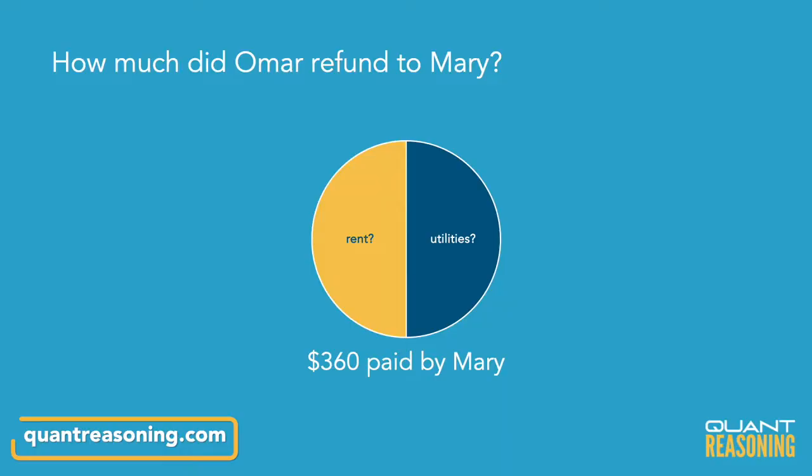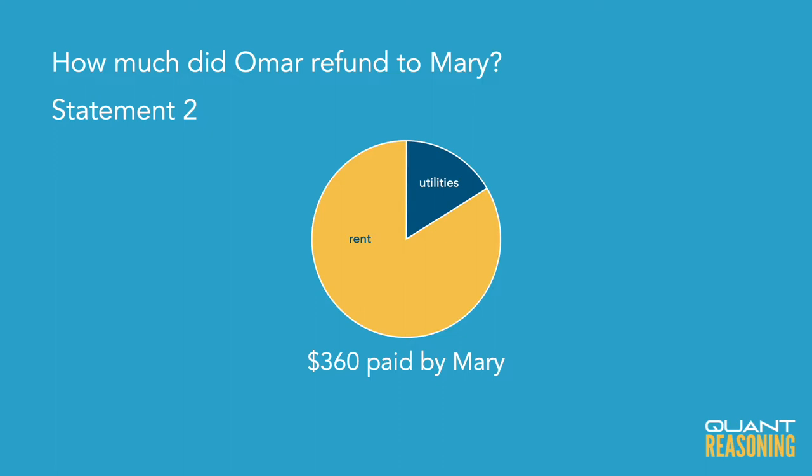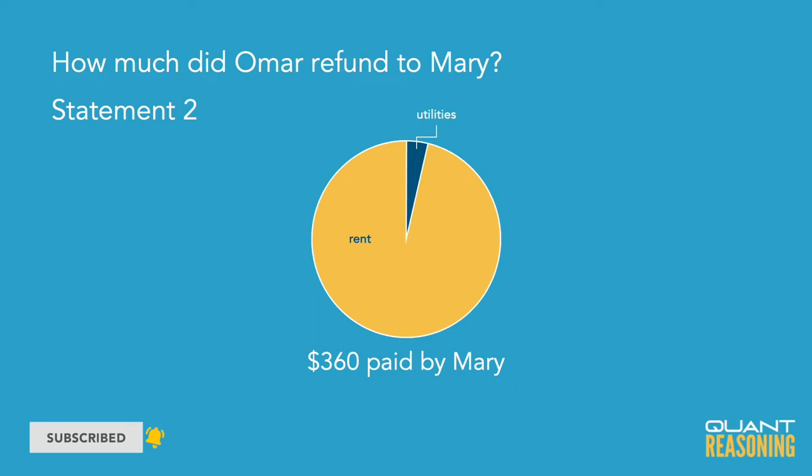Statement two looks promising because it does kind of mention some kind of fraction or ratio of the amount of money spent on rent versus utilities. The only problem though is the words 'less than' — it's less than one-fifth — so we are not actually told the proportions of rent versus utilities from the $360.